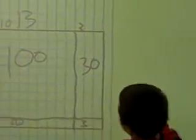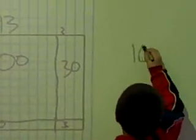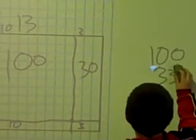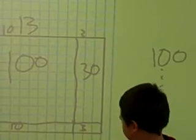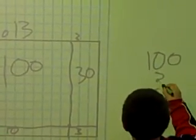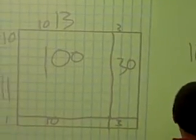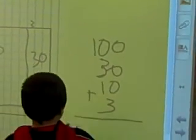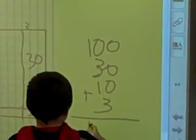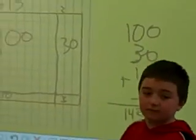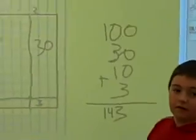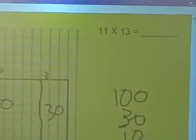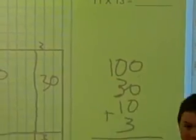Now, I'm going to add 100, 30, 10, and 3. When I add that, I'm going to get 143. So, 11 times 13 is 143.